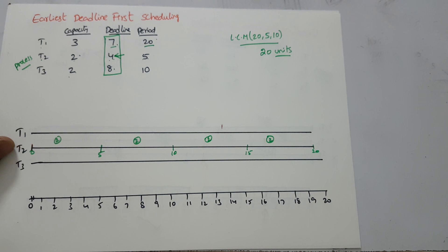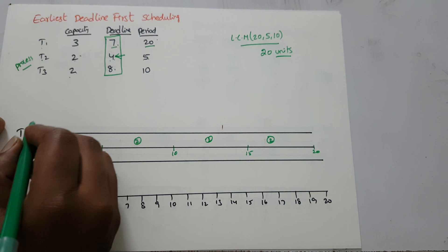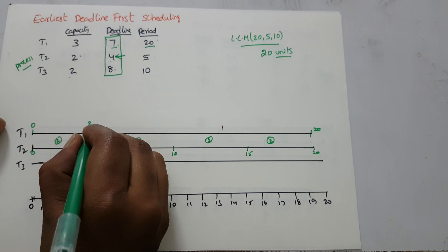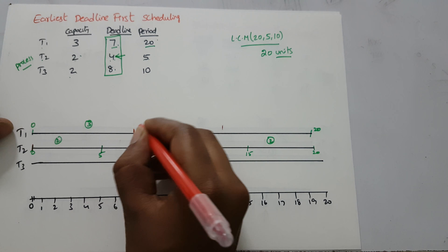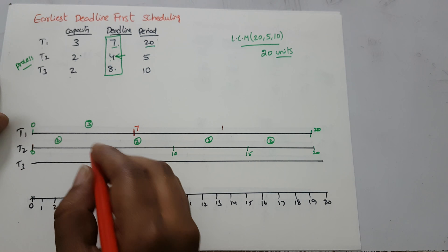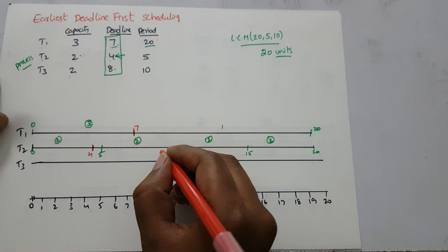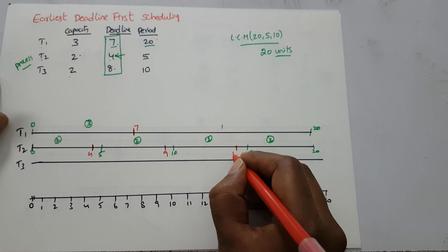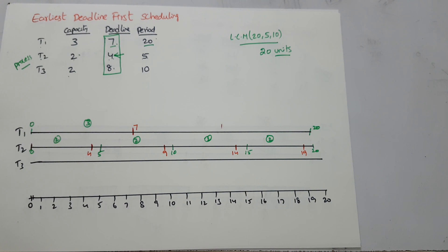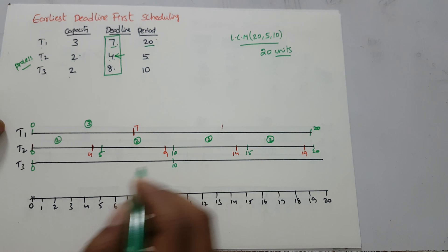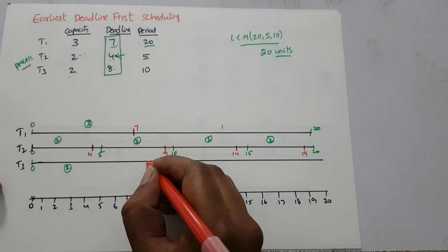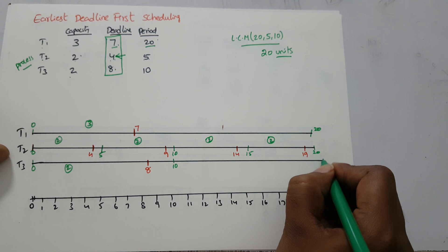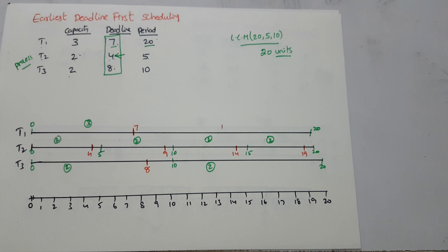The next deadline is t1 at seven. From zero to twenty it has to execute three units, and before seven it should complete its execution. t2 must complete before four, before nine, before fourteen, and before nineteen for each respective interval. For t3, from zero to ten it has to execute two units with a deadline of eight, and from ten to twenty it has to execute two units with a deadline of eighteen (ten plus eight).